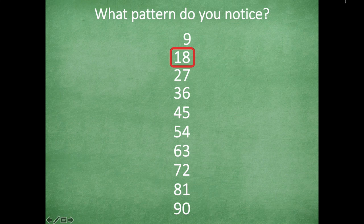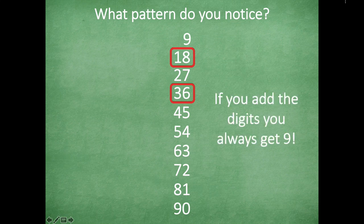What pattern do we notice here? If you look at the one and eight in eighteen it might not be obvious at first, but look at three and six in thirty-six. If I take eighteen and add those digits together — one plus eight — what does that equal? Nine! Now thirty-six: three plus six equals nine! So if you add the digits of any product when multiplying by nine, you always get nine.